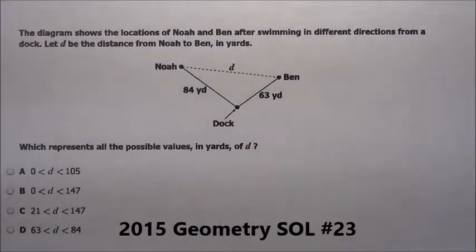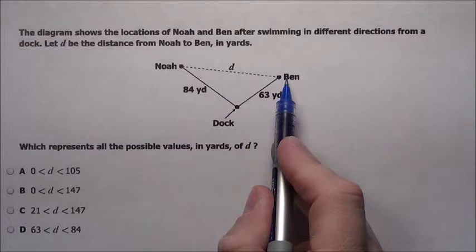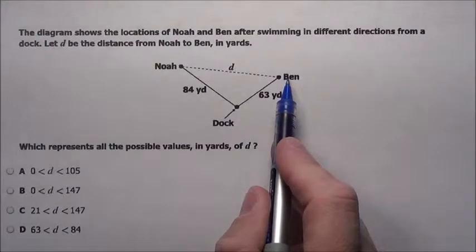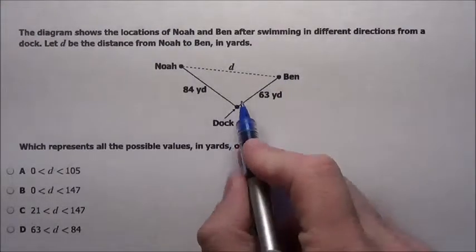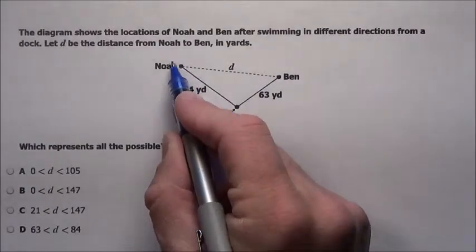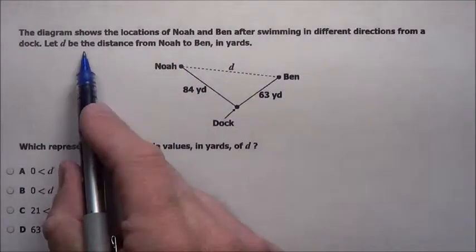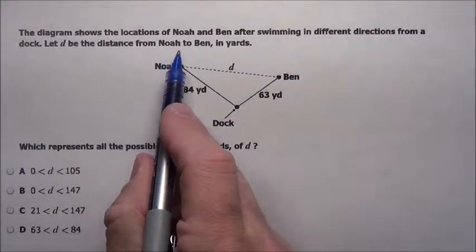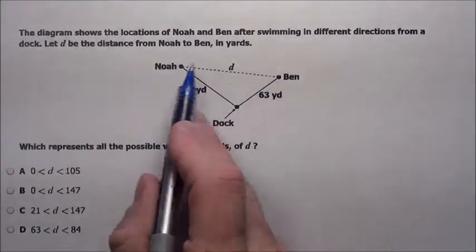The diagram shows the locations of Noah and Ben after swimming in different directions from a dock. Here's the dock — Ben swam that way 63 yards, Noah swam that way 84 yards. Let D be the distance from Noah to Ben, so we want to figure out how far apart they are.